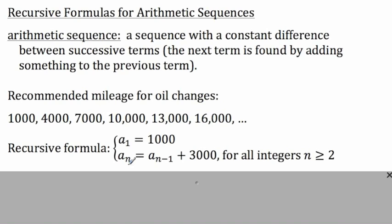Now we want to be able to generate any other arbitrary term. To show any term, we use a variable for the subscript — that's the nth term. To generate the nth term, we find the term that comes before it. Remember that n minus 1 is simply the number that comes before n. So if we're generating the nth term, the term that comes before is the n minus first term, and we take that previous term and add 3,000. This works for all integers where n is greater than or equal to 2. We can't use this formula to generate the first term — this formula works only for the second term and above.